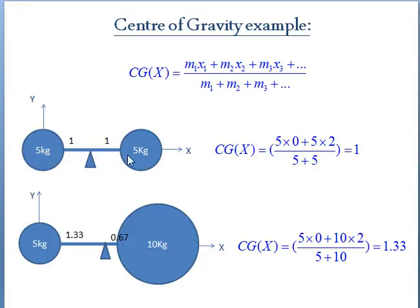Then m1 will be 5 kg and m2 will be 5 kg, and then x1 will be 0 and x2 will be 2 meters. Then if we substitute in our formula, then center of gravity comes at 1 meter. So the center of gravity will be exactly in the middle of two equal masses.